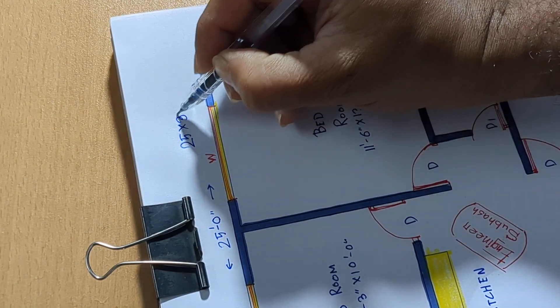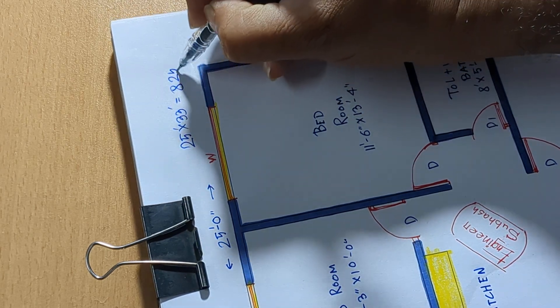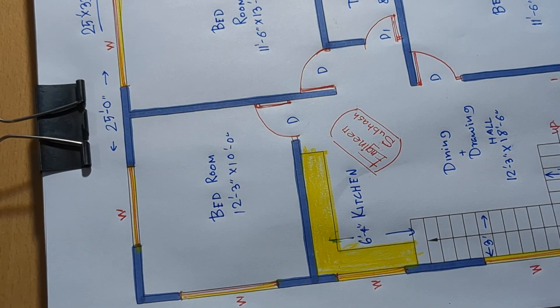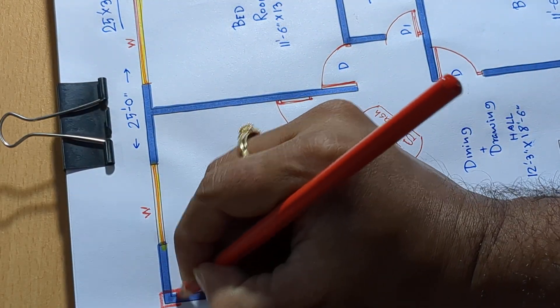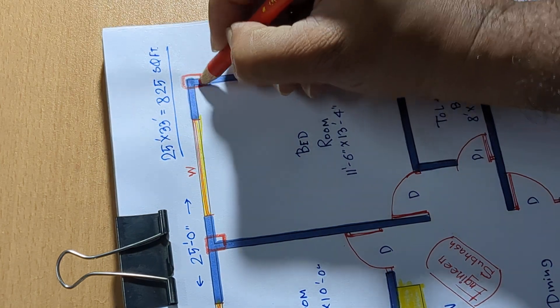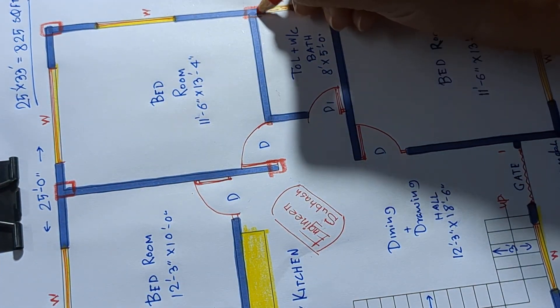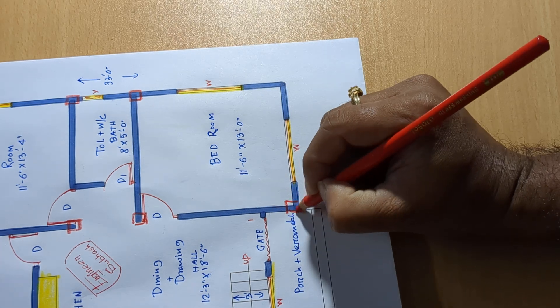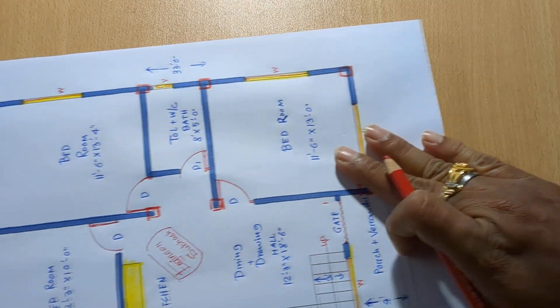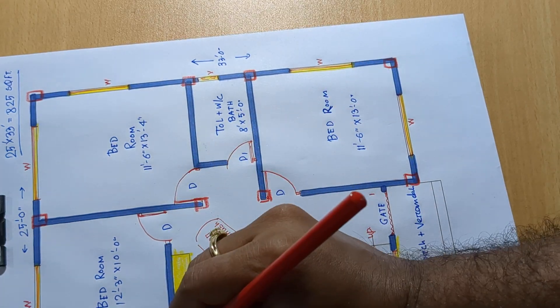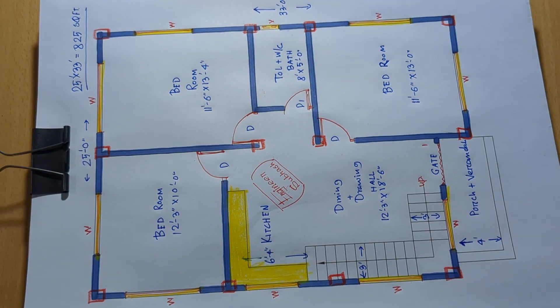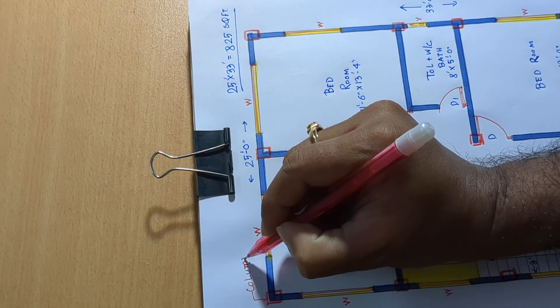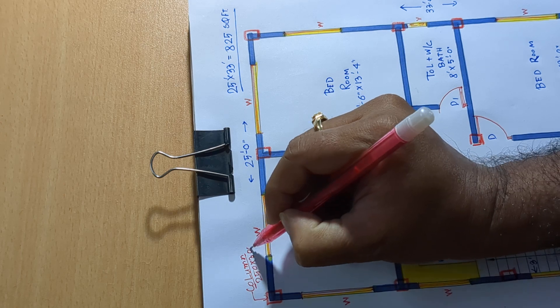25 by 33 is equal to 825 square feet house plan design. 7th column 1, 2, 3, 4, 5, 6, 7, 8, 9, 10, 11, 12th numbers column 250 by 300mm column.